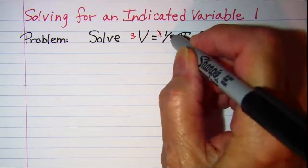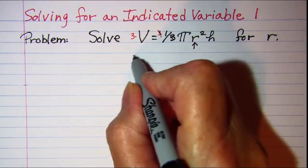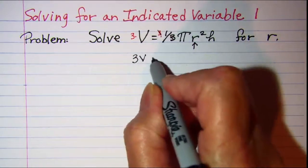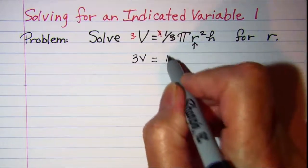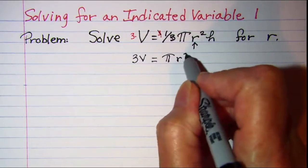These 3's will cancel and I have 3V is equal to, now I just have pi r squared h.